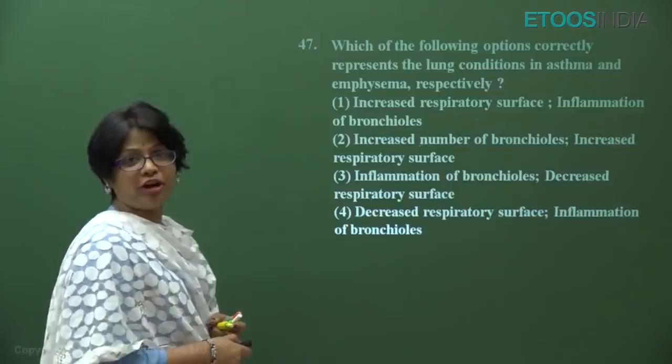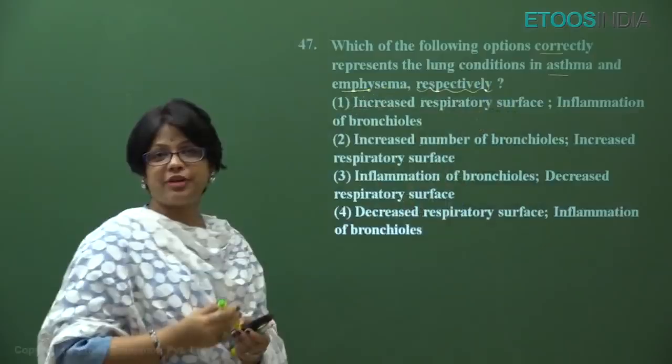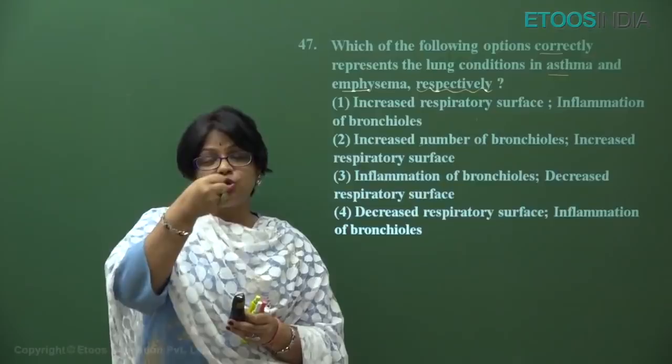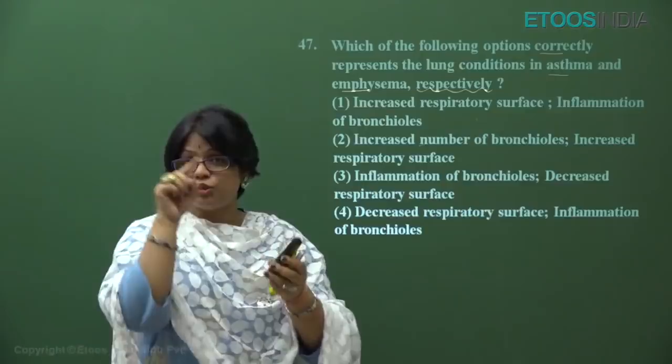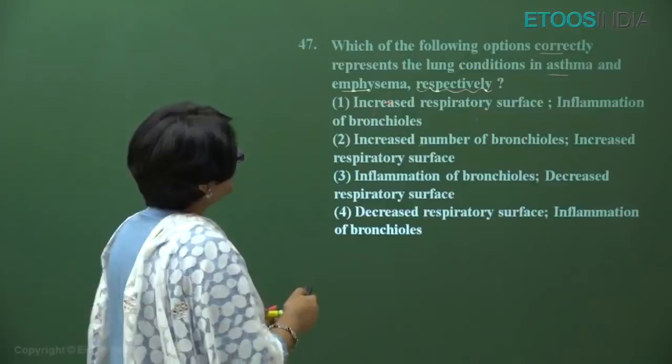Question number 47: which option correctly represents lung conditions in asthma and emphysema respectively? Asthma is due to inflammation of bronchi and bronchioles, causing constriction and difficulty in breathing. Emphysema is a chronic respiratory disorder occurring due to cigarette smoking, in which alveolar walls get damaged, so respiratory surface area decreases and gas exchange is affected.